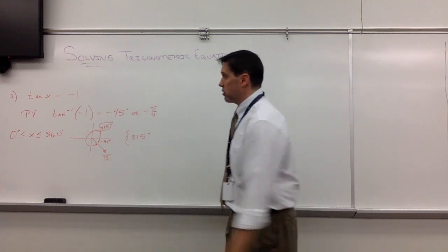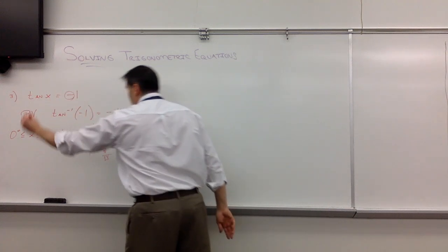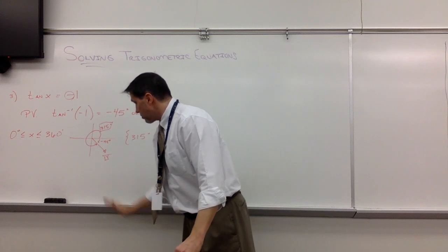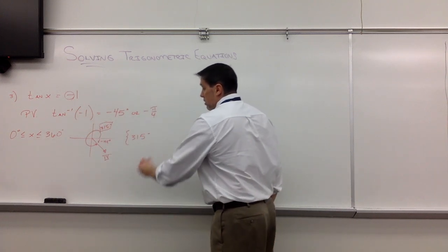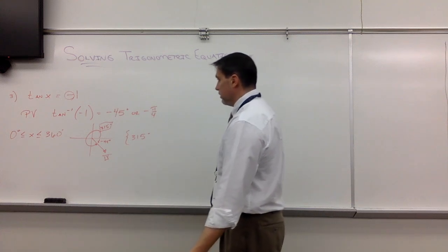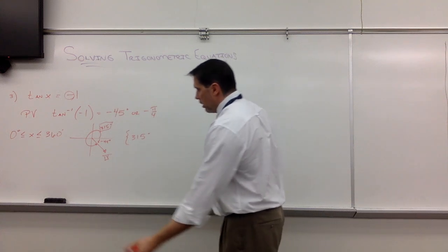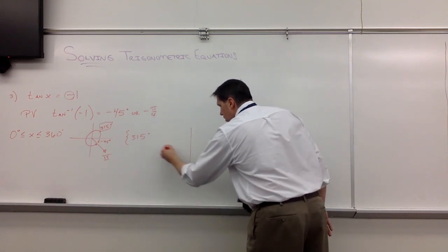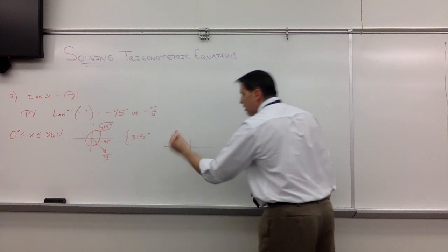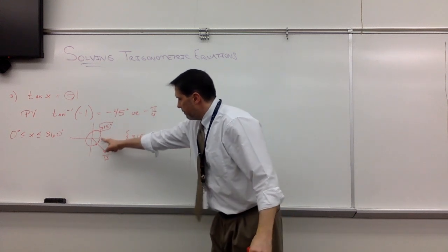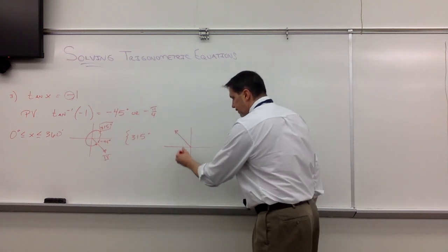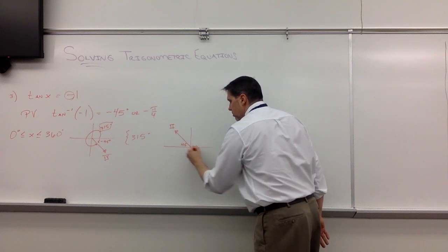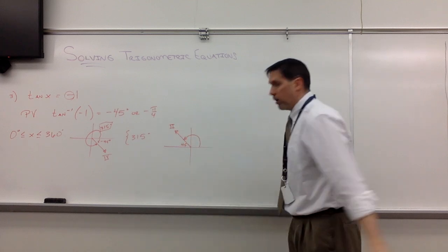Next question: where else is tangent negative besides quadrant 4? First thought might be 3. Nope, tangent's actually positive in 3. We have to go to quadrant 2. So drawing a quadrant 2 angle, if I draw a quadrant 2 angle with a reference of not negative 45, but a reference of 45 degrees, we can get our other angle. So here's quadrant 2. The other angle will be 135.